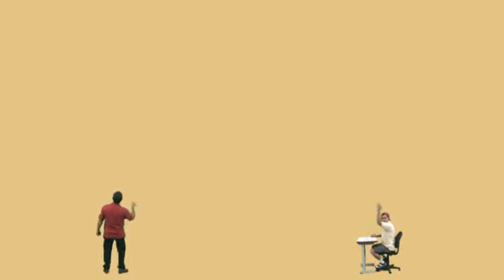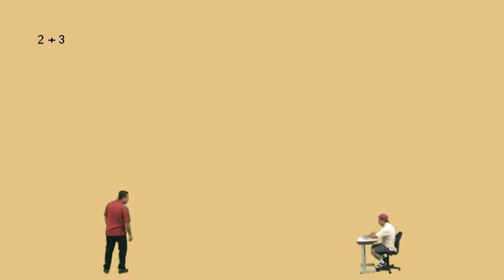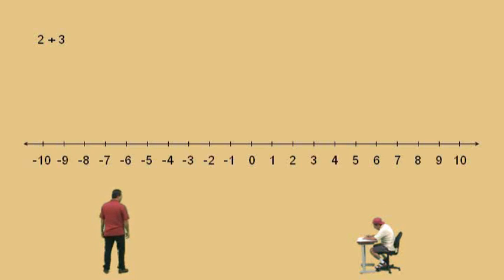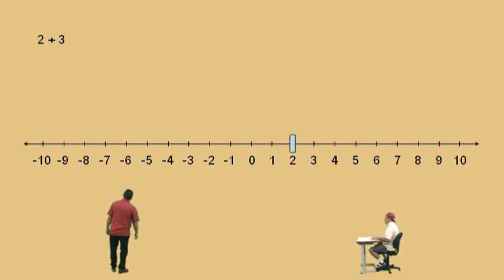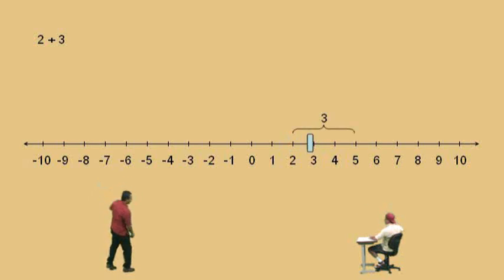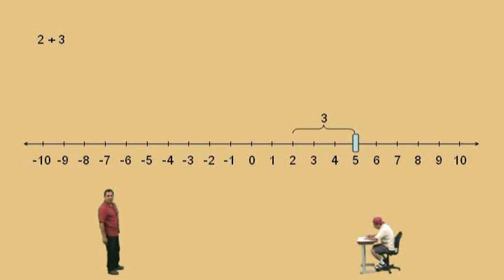Our first problem is right there — two plus three, Charlie. How do we do two plus three on a number line? Start at two, move right three. Okay, we start at two and we move to the right three times, and that gives us five. Very nice there, Charlie.